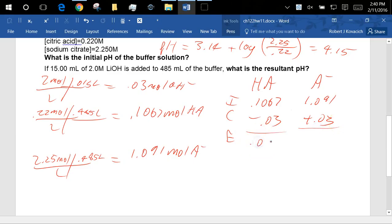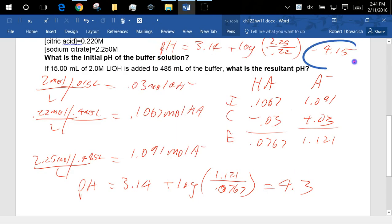What is that, 0.0767? And 1.121, so log 1.121 divided by 0.0767 plus 3.14 equals pH. So 3.14 plus log of that number divided by that. So dramatic change in pH, not so much. So a million change or 0.15 units of a pH change.